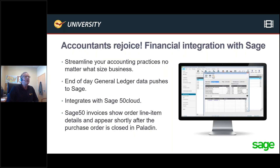Moving forward, we also have the Sage 50 Cloud integration with Paladin, which has been running at a multi-store location for some time. We've worked out a few of the kinks. At the end of the day, what happens automatically is the general ledger information gets pushed to Sage. And in real time, as you close purchase orders in Paladin, this will push those invoices over as accounts payable in your Sage 50 Cloud system.